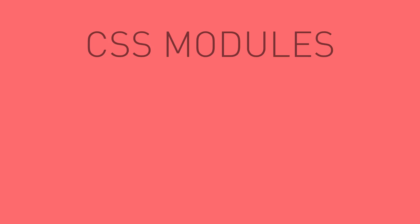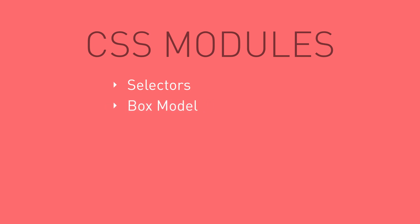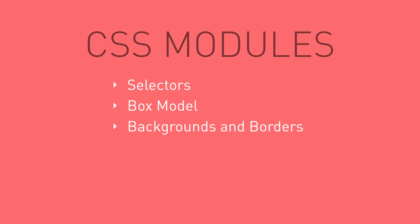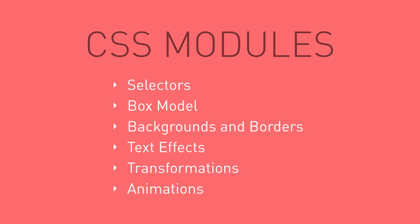So let's take a look at these modules. There are many, but here are a few of the most important ones: selectors, the box model, backgrounds and borders, text effects, transformations, and animations.